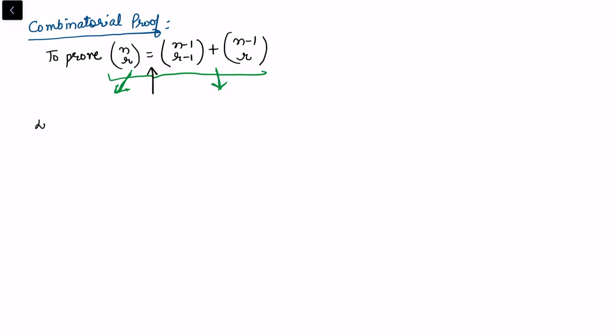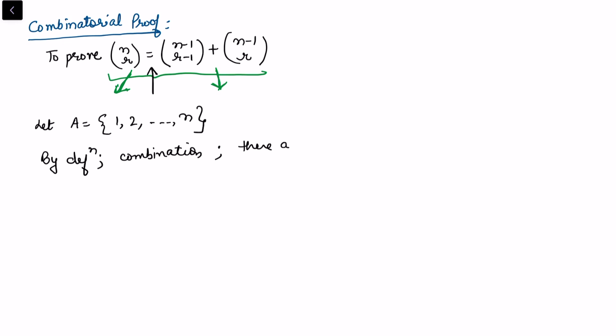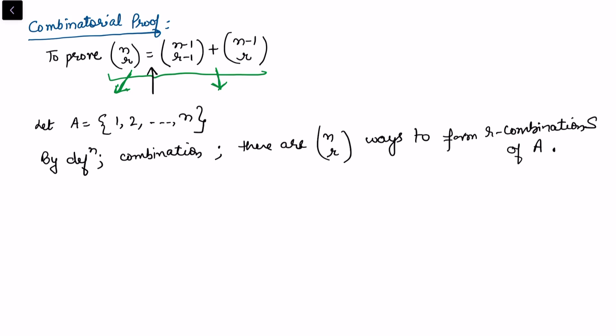Let us consider a set A with n objects. Without loss of generality, I represent those n objects by 1, 2, up to n. So these are the n symbols I'm using for n objects. By definition of combination, there are n choose r ways to form r-combinations, that is, to form subsets S of A of size r. This is simply the definition of combination: select r objects out of n, which gives ncr.